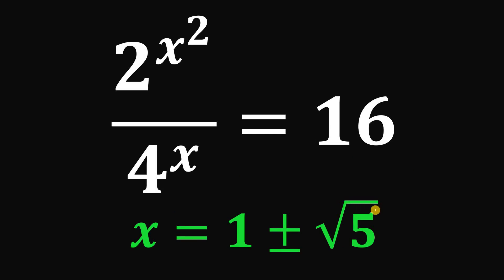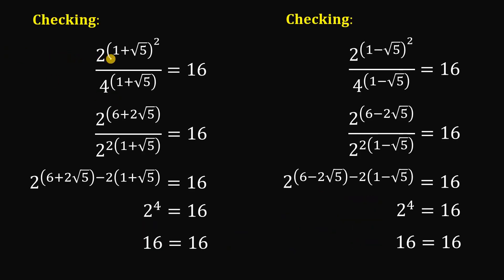And of course, let's do a quick check of our answer. So, in the first case, x equals 1 plus square root of 5. And if we do this calculation, we end up with 16 equals 16, meaning 1 plus square root of 5 is a true value for x.